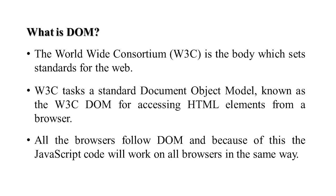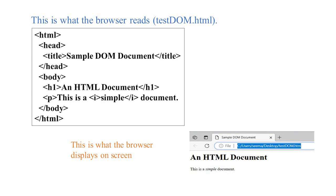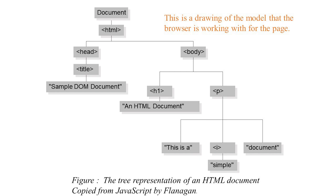The W3C — World Wide Web Consortium — is the body that sets standards for the web. It set a standard object model known as the W3C Document Object Model for accessing HTML elements from a browser. All web browsers follow this DOM standard, which is why JavaScript can access all browsers in the same way. For example, a sample DOM document gives an HTML document output — this is how the browser works, rendering all tags to produce the output.